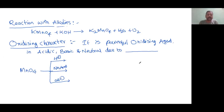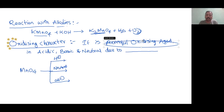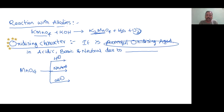The reaction with alkali is just the reverse of the preparation method. KMnO4 when treated with alkali like KOH converts back to potassium manganate and liberates oxygen. The most important topic now is the oxidizing power of KMnO4. KMnO4 is an excellent, powerful oxidizing agent.